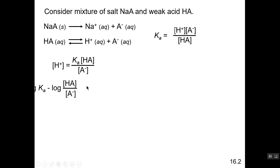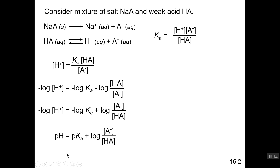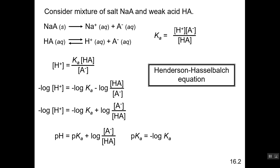If we take the negative log of both sides to find pH, we get: pH = −log(Ka) + log([A⁻]/[HA]). The −log(Ka) is the pKa. Switching the ratio from HA over A⁻ to A⁻ over HA changes the sign from negative to positive. This gives us the Henderson-Hasselbalch equation: pH = pKa + log([A⁻]/[HA]), which is the formula used to calculate the pH of a mixture of a weak acid and its salt.